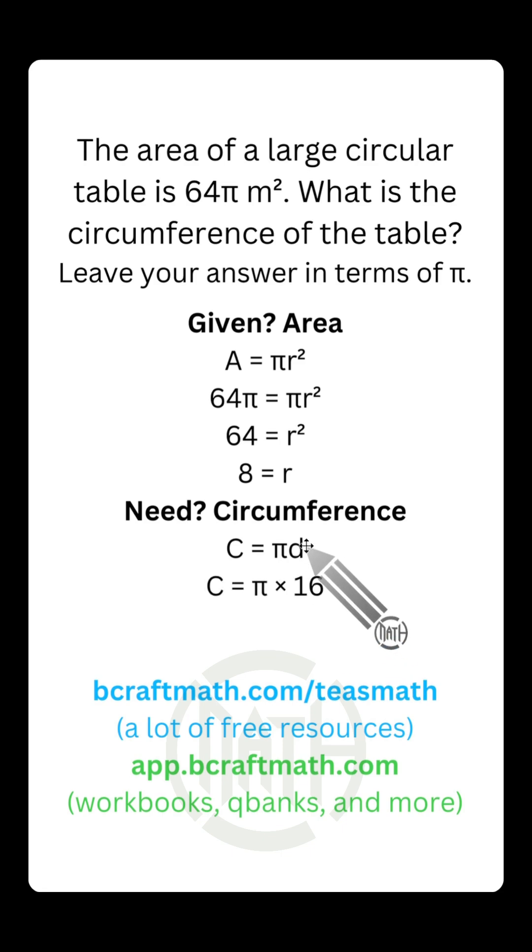I'm substituting that in. So circumference equals π times 16. And as mentioned earlier, we have to leave our answer in terms of π. We're letting π hang out the entire problem, right? But a common way that you will see this written is circumference equals 16π. There's nothing wrong with leaving π times 16, but this is the more common way that you'll see it written. We're not using 3.14.